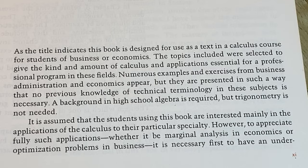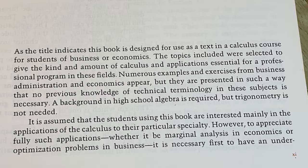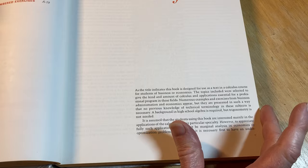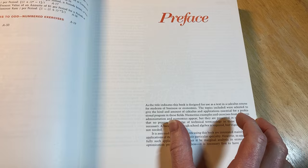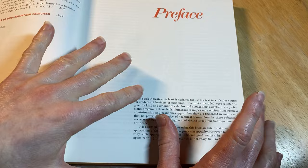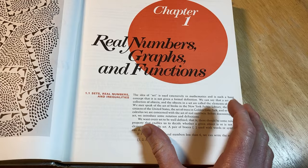A background in high school algebra is required, but trigonometry is not needed. So let's just stop there. So you don't need trig for this book. So you can actually learn calculus without trigonometry, and that makes this one of the easiest books out there for actually learning calculus because you don't need trig. So if you just have basic algebra, you can actually buy this book if you can find it and start learning calculus.